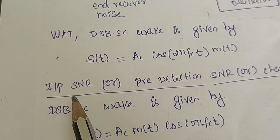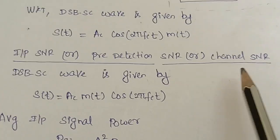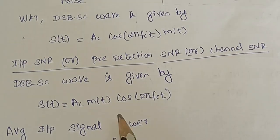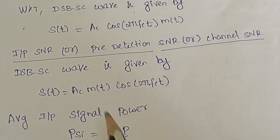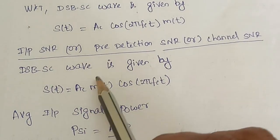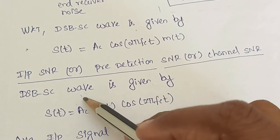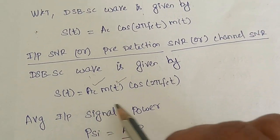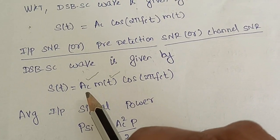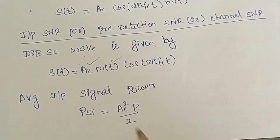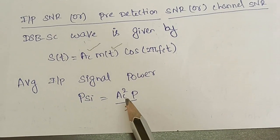We have to find the input SNR, otherwise called pre-detection SNR or channel SNR. To find signal power, we consider the amplitude alone. Ac is the amplitude of the carrier and M of T has the amplitude of the message. The average signal power is (Ac/√2)² which gives Ac²/2, multiplied by P, the average power of the message. So input signal power is Ac²P/2.